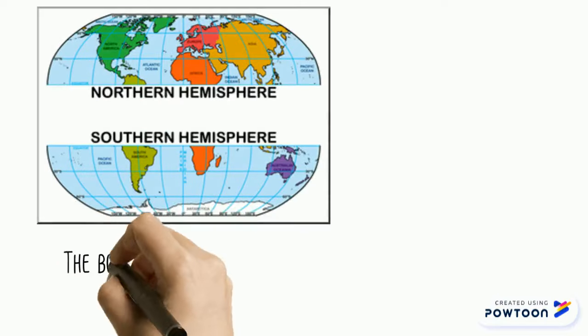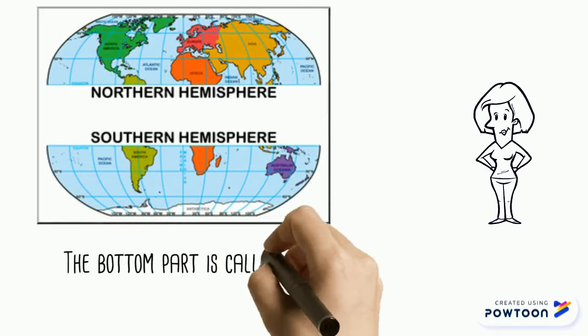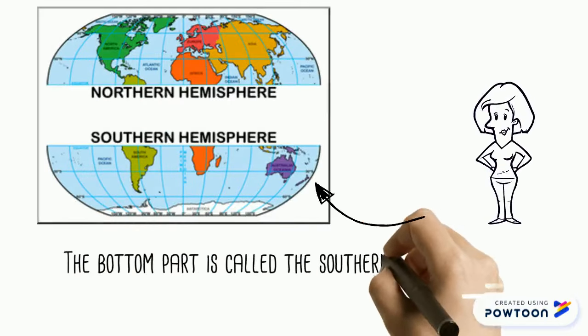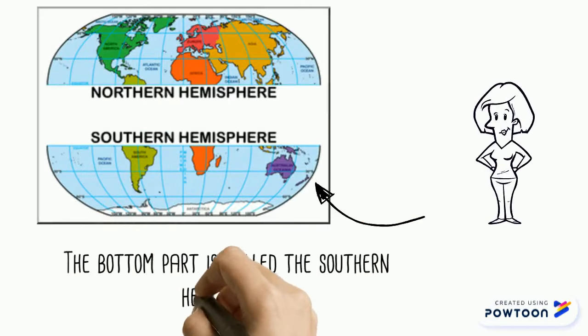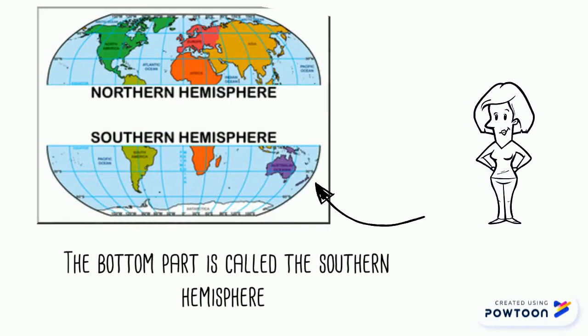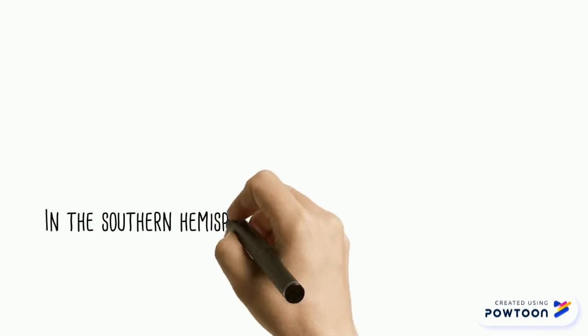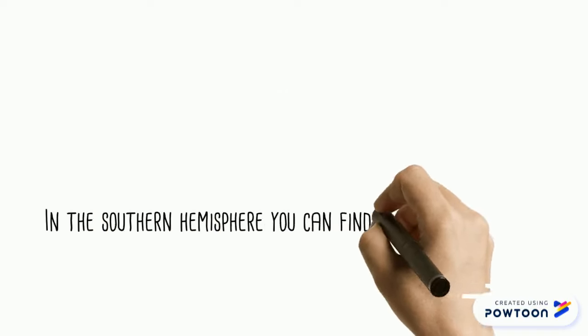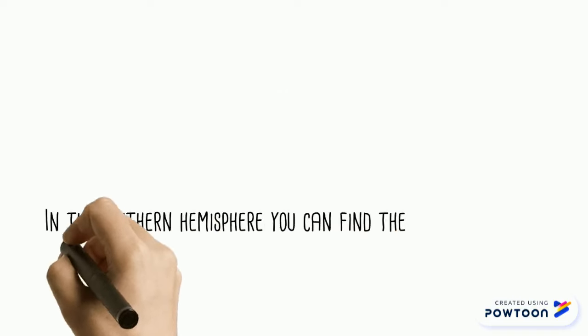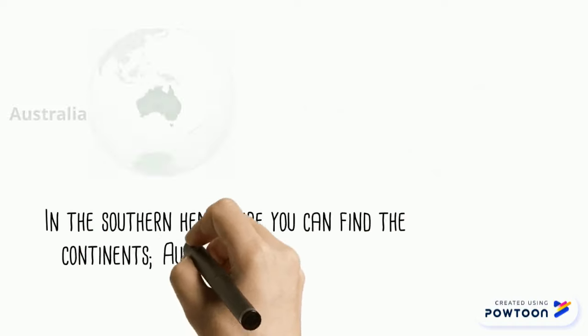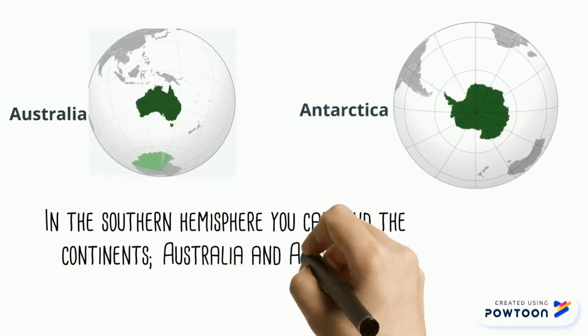The bottom part is called the southern hemisphere. In the southern hemisphere, you can find the continents Australia and Antarctica.